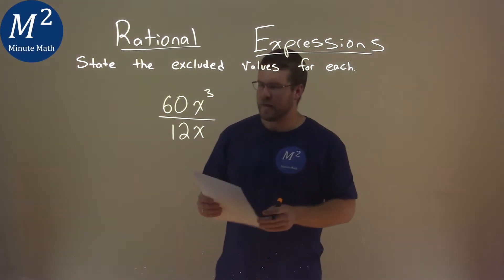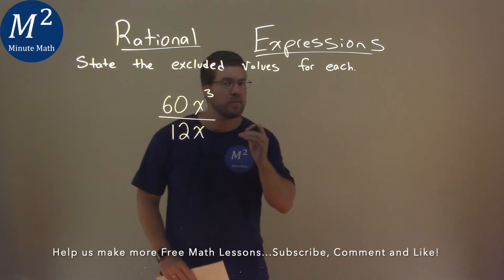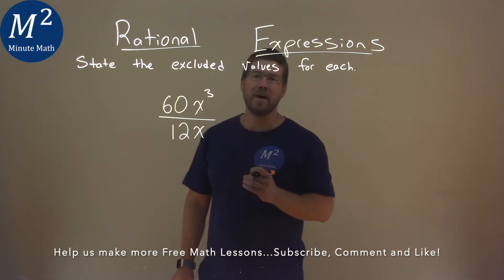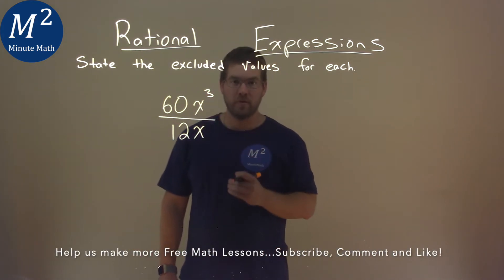We're given this problem right here: 60x³ divided by 12x, and we need to state the excluded value.